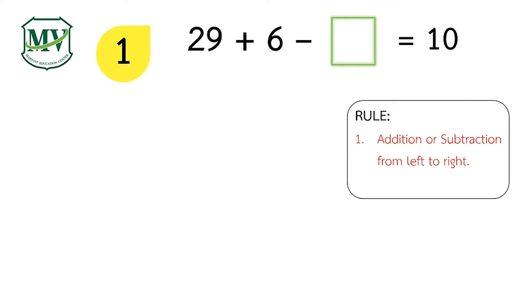So 29 plus 6 equals 35. 35 minus box equals 10. What number can be subtracted from 35 that would give you the difference of 10? Correct! The answer is 25. Good job! Therefore, 35 minus 25 equals 10.